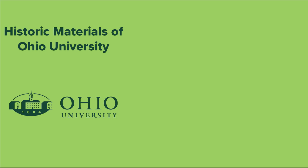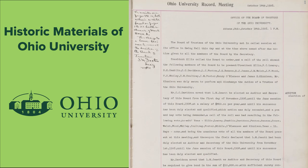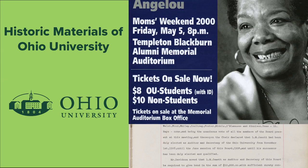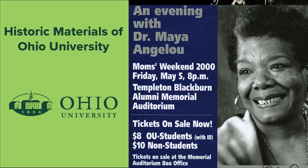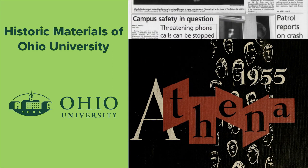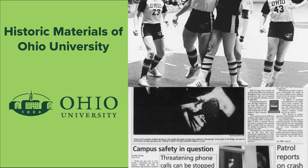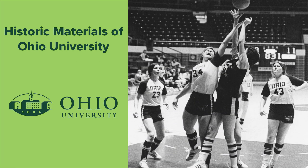You can also access digitized historic materials covering over 200 years of Ohio University history. This ranges from Board of Trustees minutes and historical event programs to yearbooks, student newspapers, and university sports.